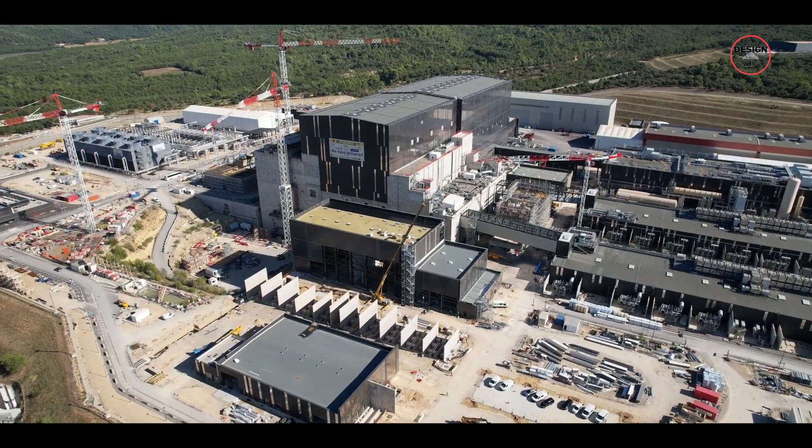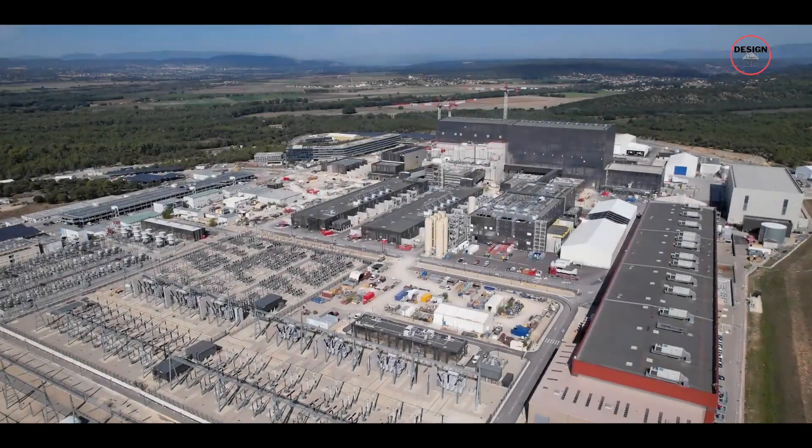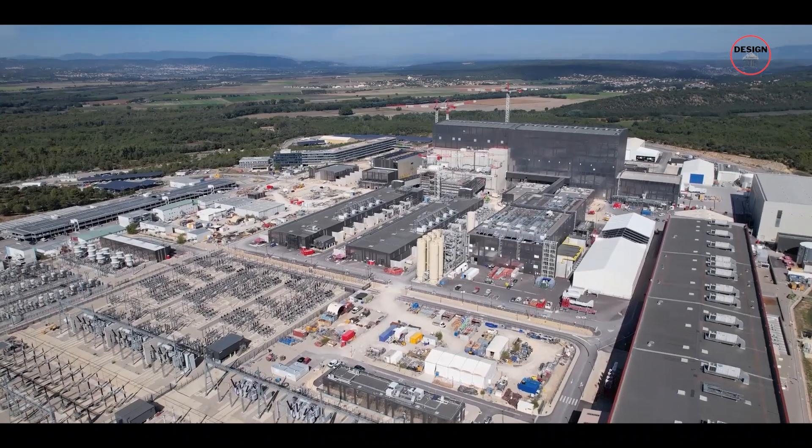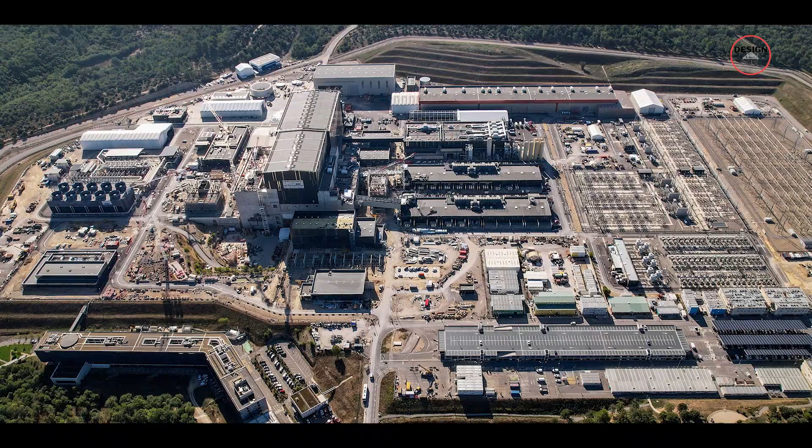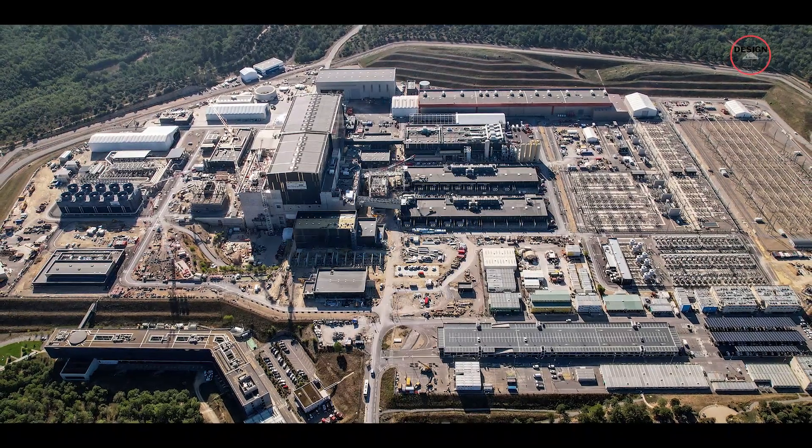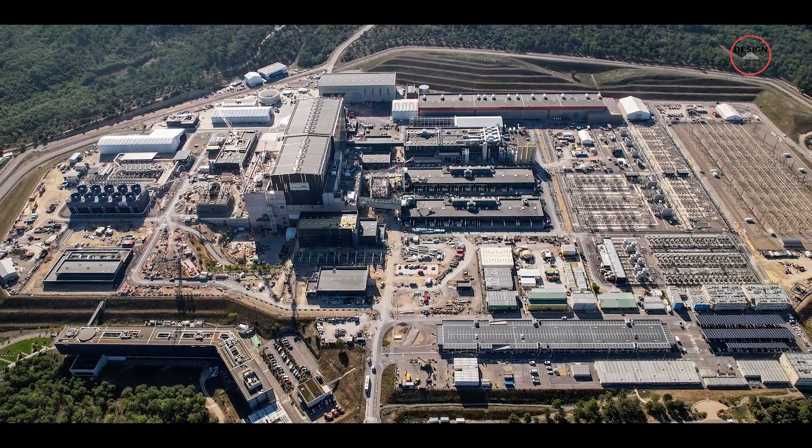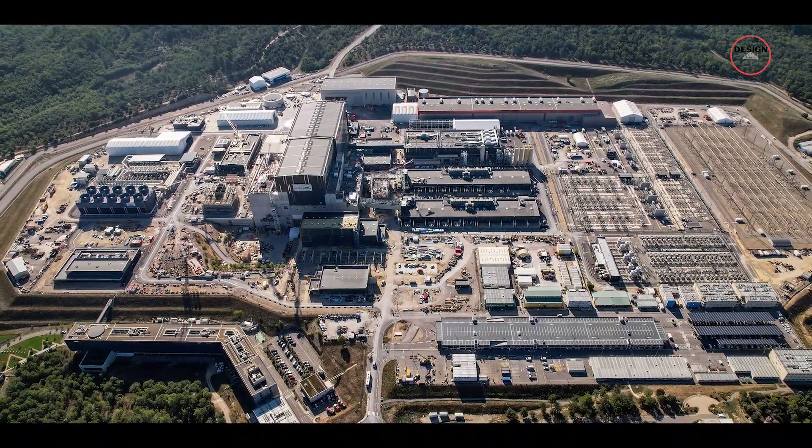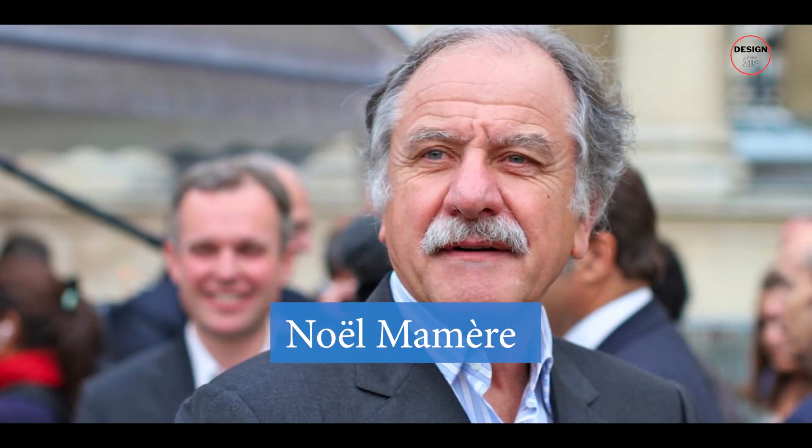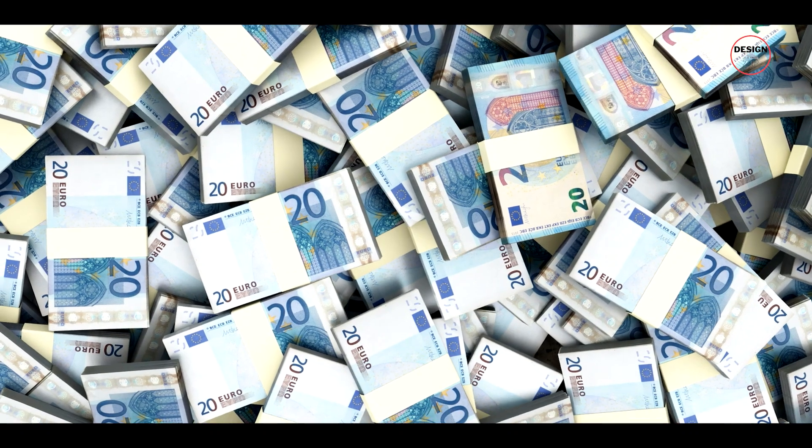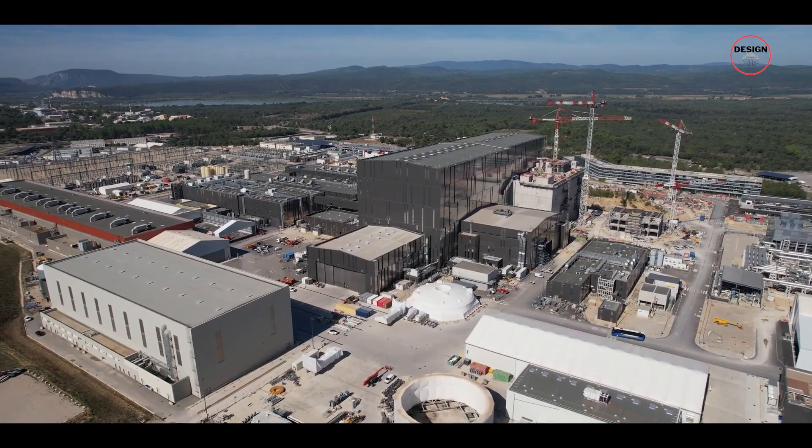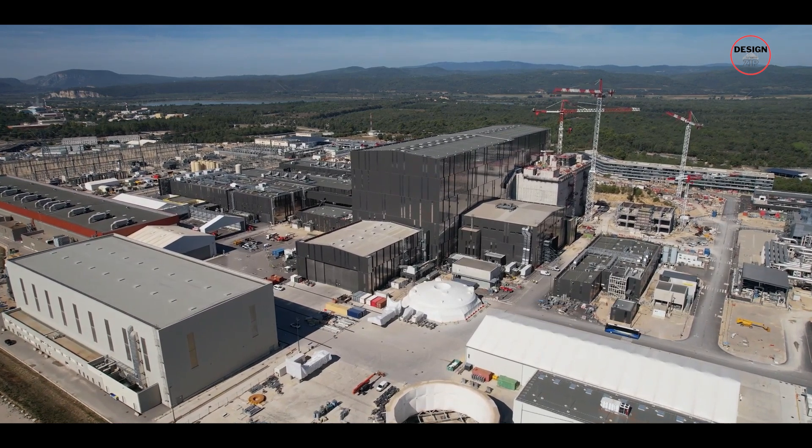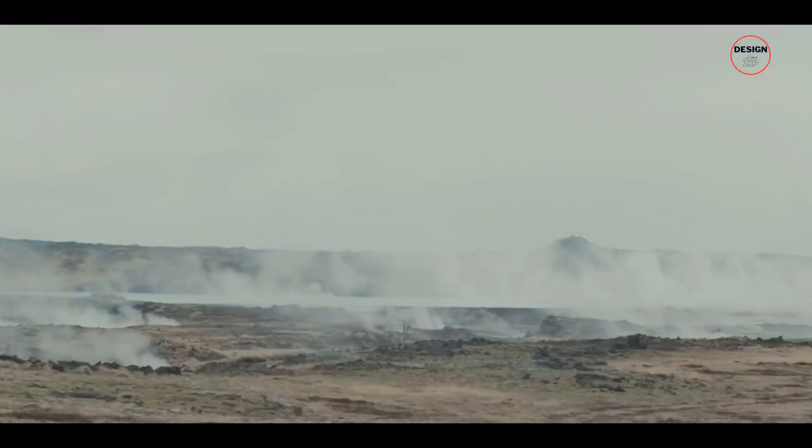The ITER project has faced a lot of heat from critics. People are worried about its environmental impact and the project's goals. When France was picked as a site for ITER in 2005, some European environmentalists were not happy. For example, French politician Noël Mamère argued that investing 10 billion euros in a project with a 30-50 year timeline was not a smart idea for tackling global warming right now.